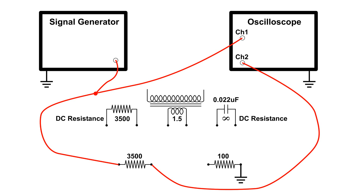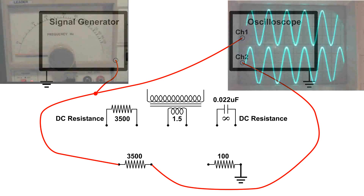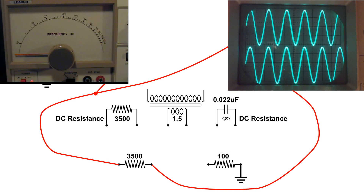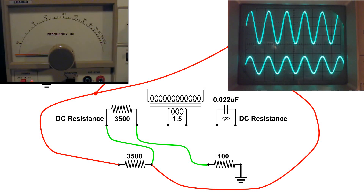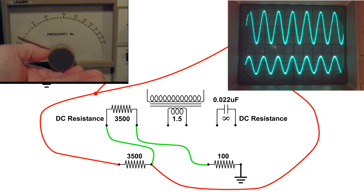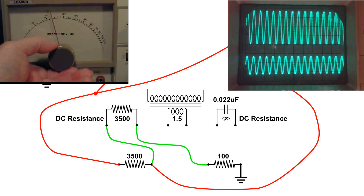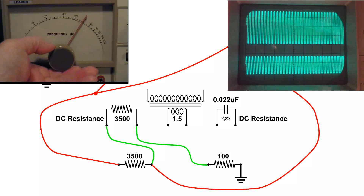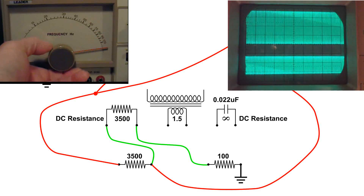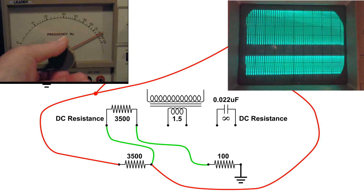I'm going to run this again, but this time with the wiring diagram. Now I'm going to hook up the resistor. We'll see that channel two is a little lower in amplitude, but when I change the frequency, the level stays pretty much the same, or varies with the generator.